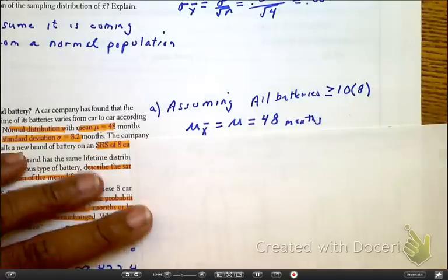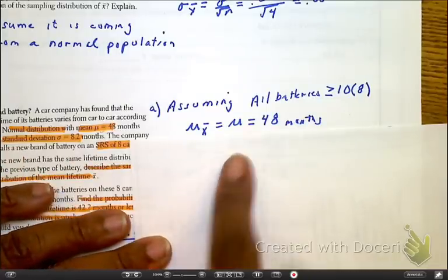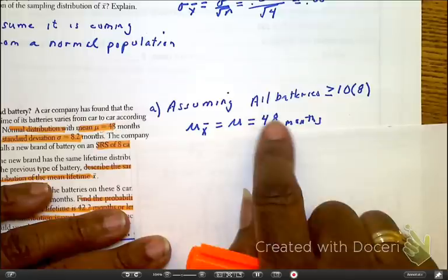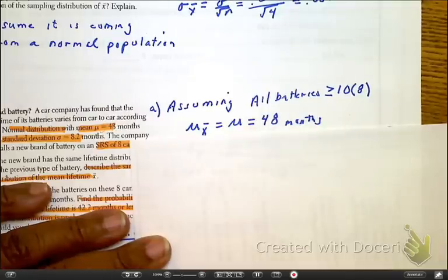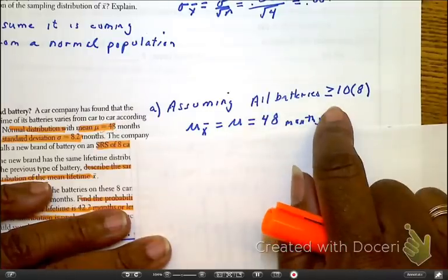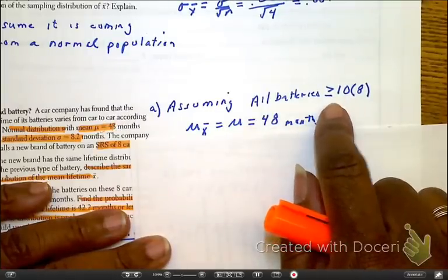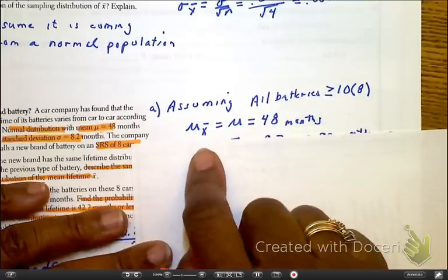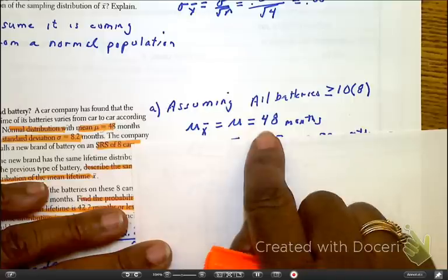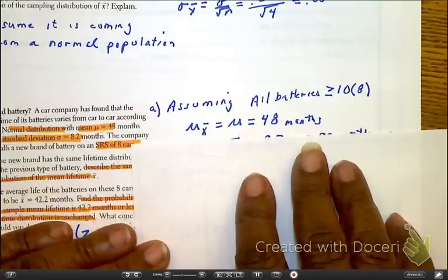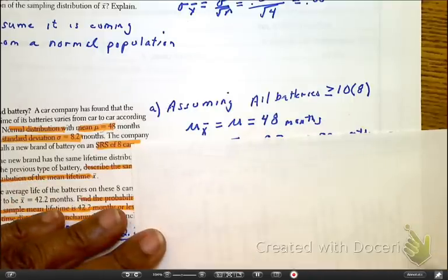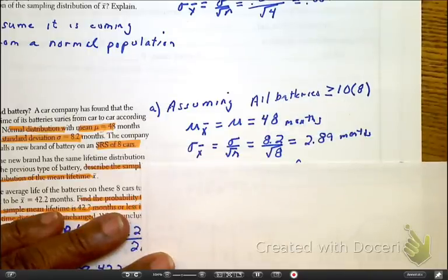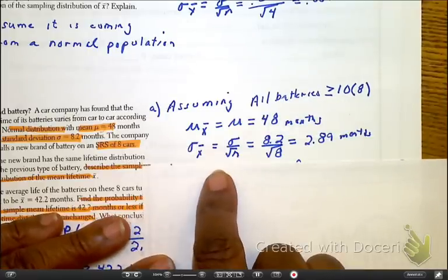We're asking to describe the sampling distribution and then eventually find the probability that the sample mean is going to be 42.2 months or less in this lifetime distribution. As I look at the 10% rule, we got to see if the sample size is going to be okay. All batteries will have to definitely be greater than or equal to 10 times the 8 that we chose. If that's the case, we know that the mean of the sample is going to equal the mean of the population, which is the 48 months. Considering this condition, we can find the standard deviation with our new formula.